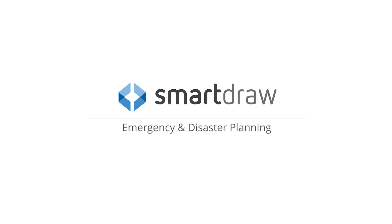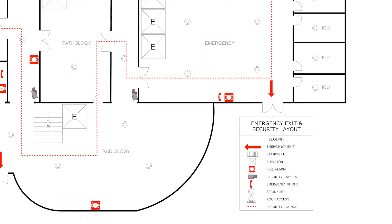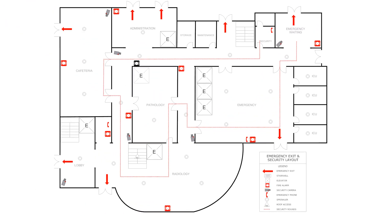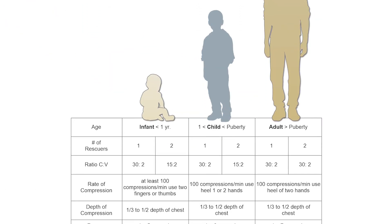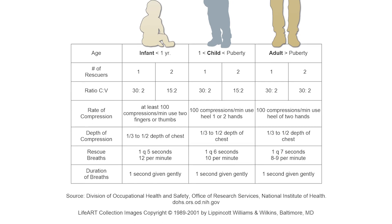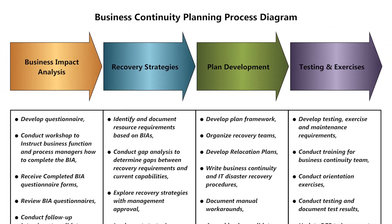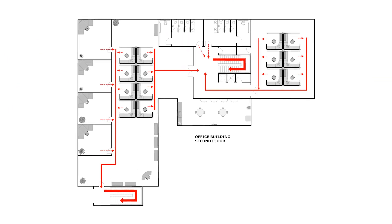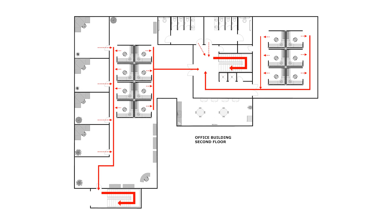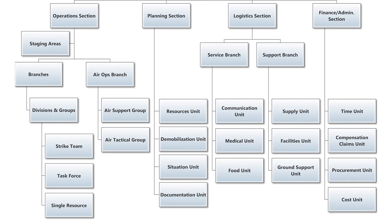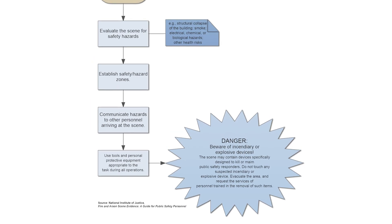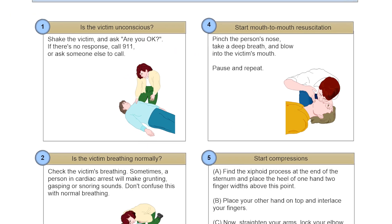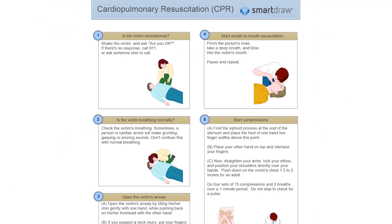Companies of any size need to prepare for emergency situations, and in many cases it is required by law. SmartRAW provides all kinds of helpful diagrams, forms, graphics, and information to help you plan for an emergency. From evacuation floor plans and chain of command diagrams to fire safety and first aid visuals, SmartRAW has you covered.